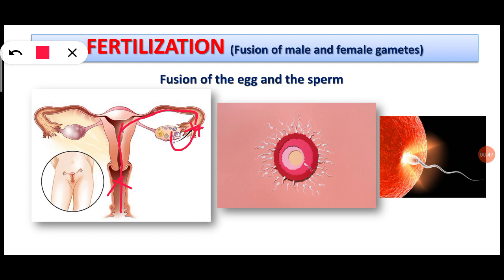You can see that during this process a large number of sperms may reach the egg. Here you can see the whitish structures — these are the sperms — and this red-colored structure is the egg. However, a large number of sperms has reached the egg, but only one sperm will fuse with the egg.